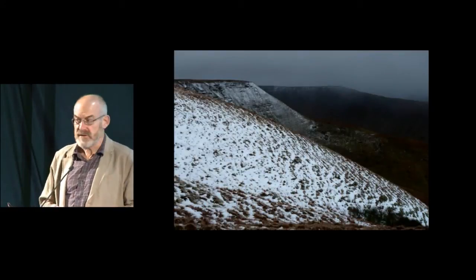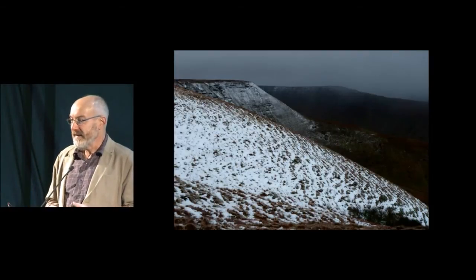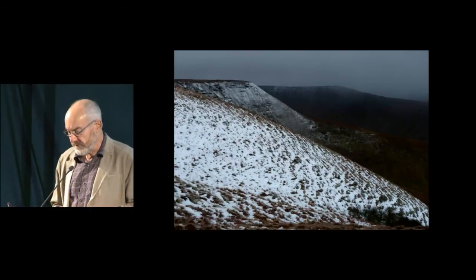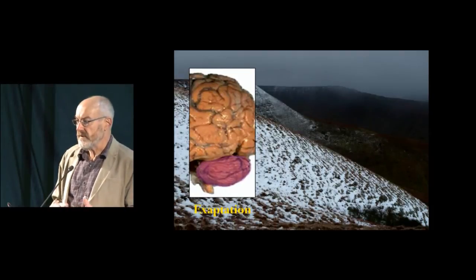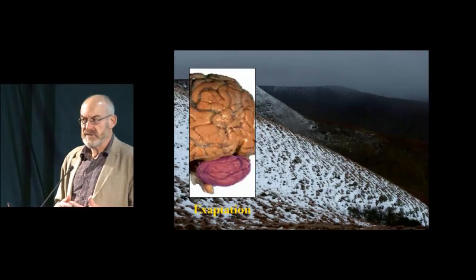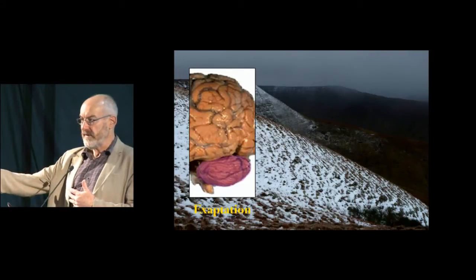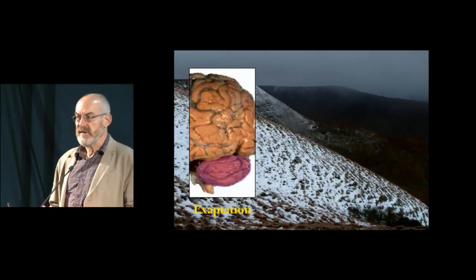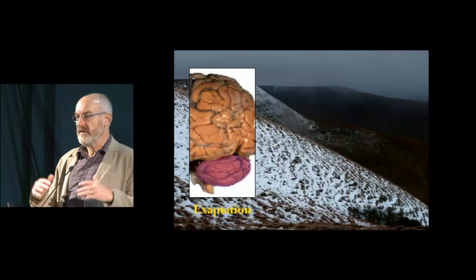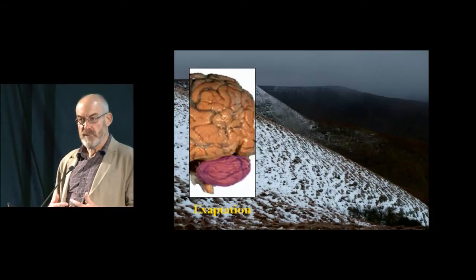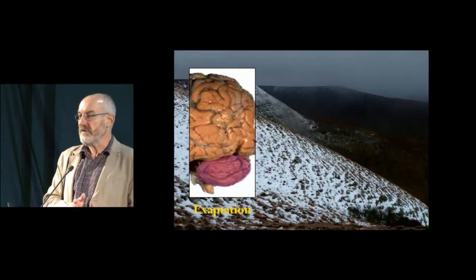I thought I'd start with a picture of the Brecon Beacons — a reminder that we're physical creatures, we exist in a physical universe. I want to go through three key things from biology. One is a concept called exaptation. Adaptation you all know from evolutionary theory — something evolves for a specific function over a period of time. For example, feathers on dinosaurs evolved for warmth or sexual display. Then one day a dinosaur with many feathers discovers it can glide between trees, and feathers which adapted for warmth exapt for flight.